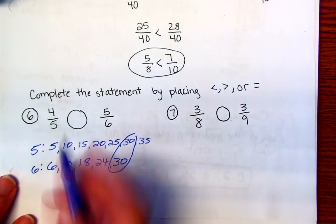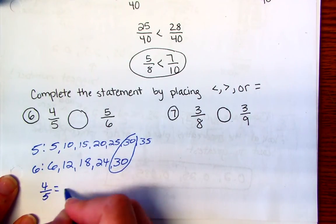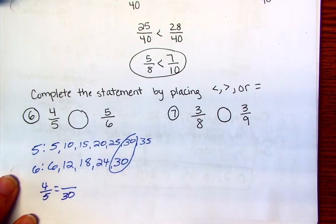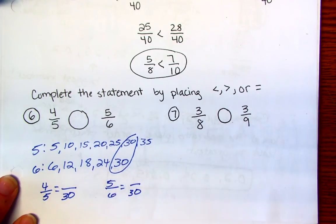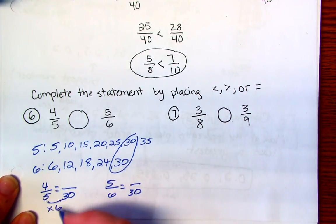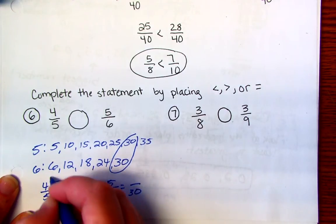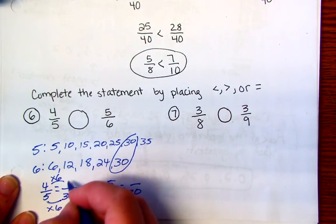So what this means is that 4 fifths needs to turn into a fraction with a denominator of 30. And then 5 sixths needs to turn into a fraction with a denominator of 30. So I ask myself, how does a 5 get to a 30? So 5 times 6, and if I multiply the denominator by 6, I have to multiply the numerator by 6. So 4 times 6 is 24.